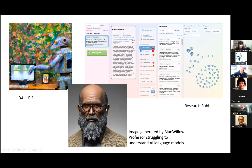The one below was created in Blue Willow. Peter wanted something that would represent a professor struggling to understand AI language models. The first thing you can observe is what they consider a professor to be — unsurprisingly, the bias there is that it's a middle-aged to late, white male. And yes, that sounds like a cue for the next slide.